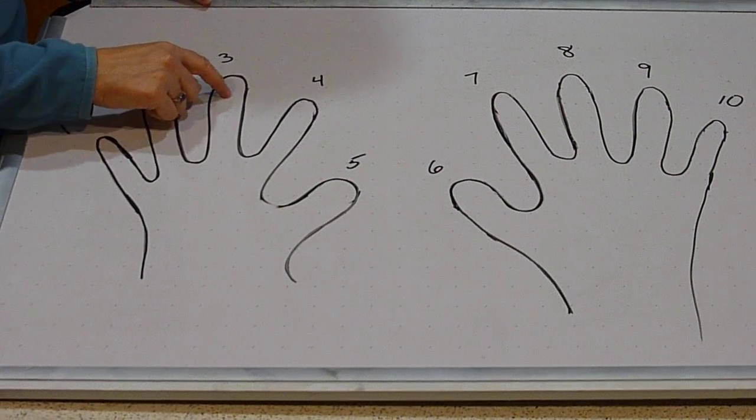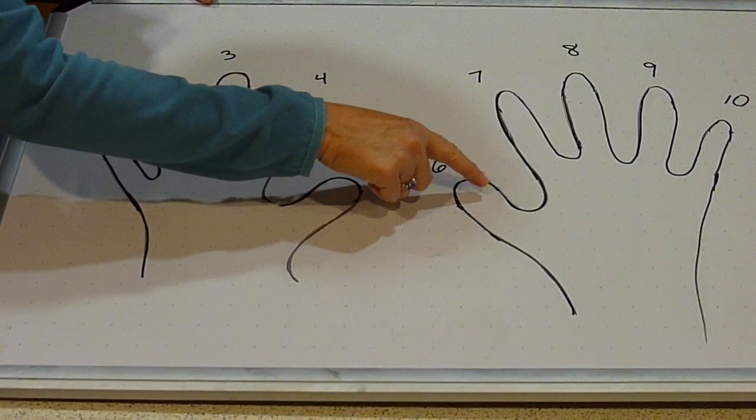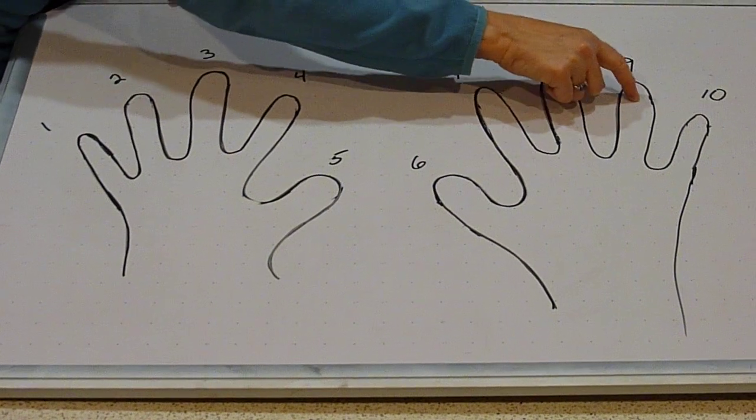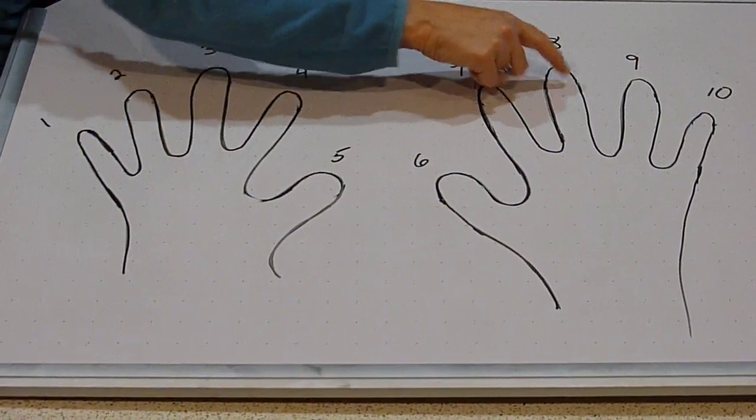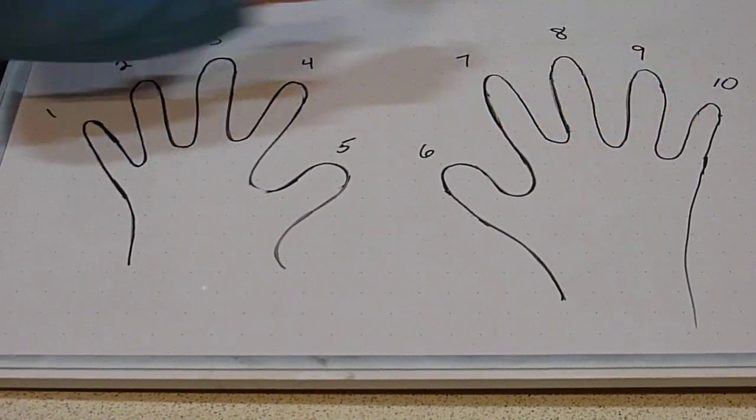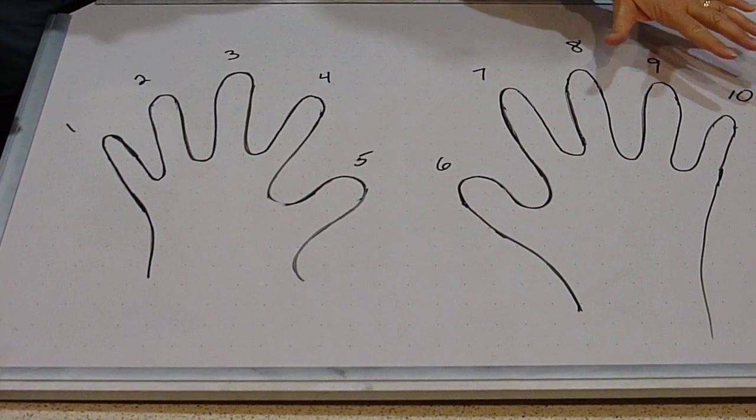Three, six, nine, twelve, fifteen, eighteen, twenty-one, twenty-four, twenty-seven, thirty, twenty-one, twenty-four, twenty-seven, thirty. So I always repeat the last four fingers.